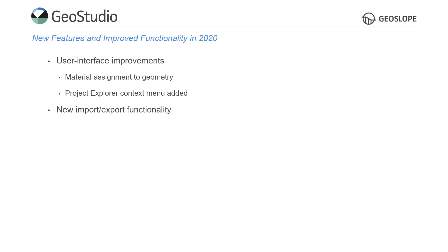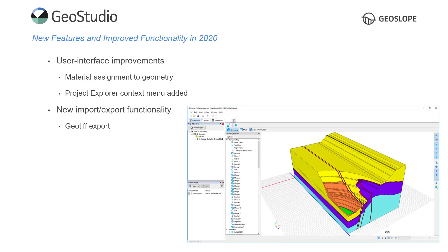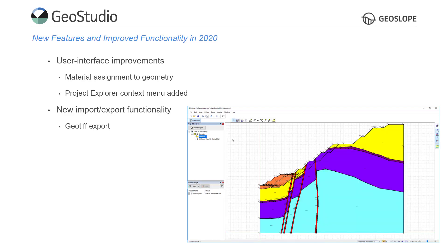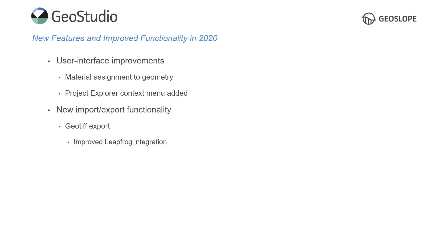GeoStudio's import and export functionality was expanded. When a 2D geometry has 3D spatial information — because it was a cross-section from a Build3D geometry or because it was imported from a DXF file — GeoStudio keeps the real-world transformation information when exporting to a TIFF file. This allows for better integration with programs like LeapFrog and AutoCAD, as the file can be directly imported into these programs with the correct three-dimensional location. In addition, display units are now used when importing and exporting files in GeoStudio.